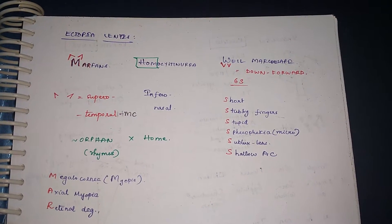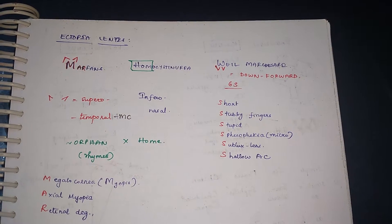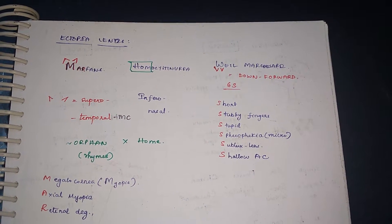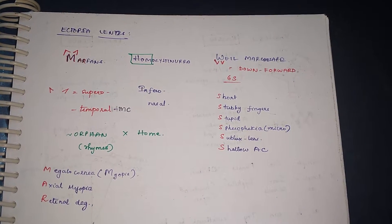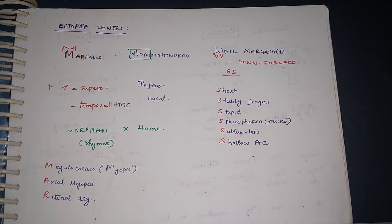Because Marfan's rhymes with orphans, and orphans don't have home, so it is Homocystinuria. And Marfan's, so Marchesani disease, that is Weill-Marchesani disease. And as you can see, the features of Marfan's can be remembered by putting a cap on the top of M.